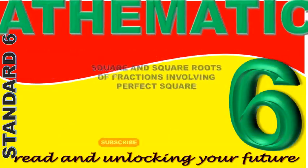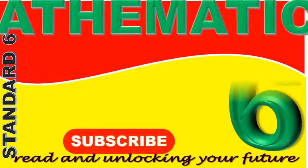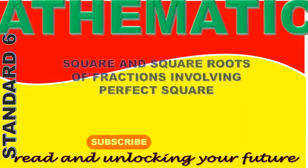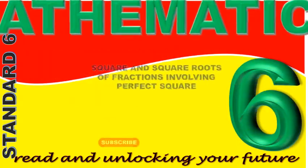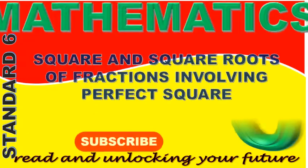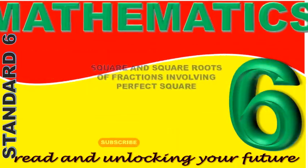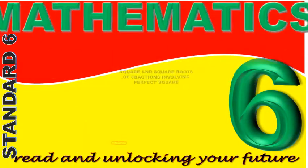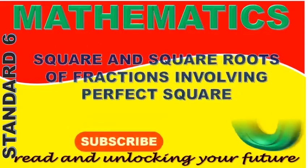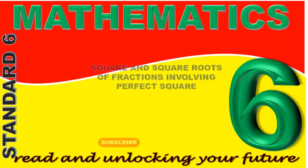We get squares of numbers by multiplying the number by itself. We can also multiply fractions. Mary, what is a quarter multiplied by a quarter? A quarter multiplied by a quarter is 1/16. That is 1 out of 16. I multiplied 1 by 1 to get 1 and 4 by 4 to get 16. A quarter multiplied by a quarter is 1/16th. We multiply the numerator by numerator and the denominator by denominator to get the answer. Teacher, please write this on the board: 1 out of 4 multiplied by 1 out of 4 is equal to 1 out of 16.